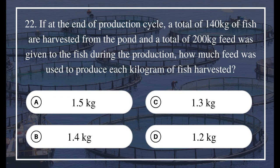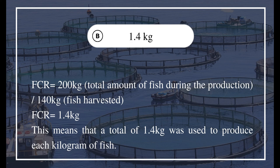Question 22: If at the end of a production cycle a total of 140 kg of fish are harvested from the pond, and a total of 200 kg of feed was given to the fish during the production, how much feed was used to produce each kg of fish harvested? A) 1.5 kg, B) 1.4 kg, C) 1.3 kg, D) 1.2 kg. The answer is B) 1.4 kg. FCR = 200 kg ÷ 140 kg = 1.4 kg. This means a total of 1.4 kg of feed was used to produce each kg of fish.